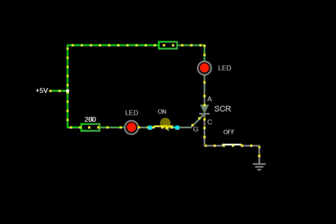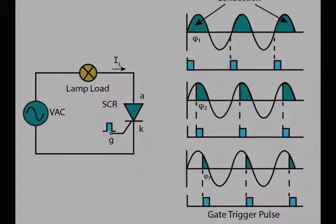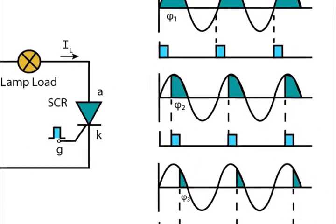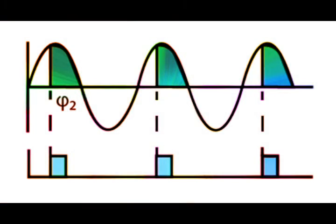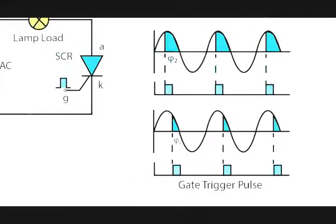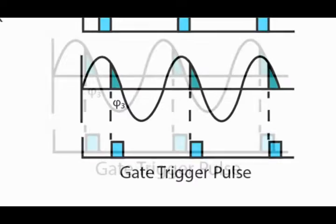Natural commutation does not occur in thyristors fed from DC sources because the DC source voltage is continuous and unidirectional, and other means must be used to turn off the thyristor at the appropriate time. At the beginning of each positive half wave, the SCR turns off when a pulse is applied to the gate. The SCR turns on and remains on for a positive half cycle.